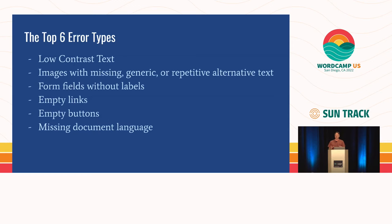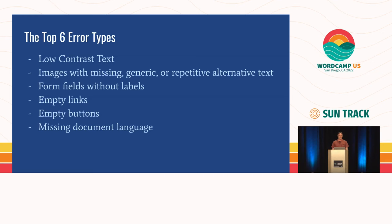Error number two: images with missing, generic, or repetitive alternative text. To be clear, this is not images with inappropriate alternative text — that cannot be tested with automation. These are images where the alt attribute is literally missing. A missing alt attribute doesn't mean the same thing as an empty alt attribute. A missing alt attribute says we have not told you what this is. An empty alt attribute declares that this image is decorative — very different semantically. Generic means something like the word 'image' or 'graphic' plugged in repeatedly, which is pointless because screen readers already announce that it's an image.